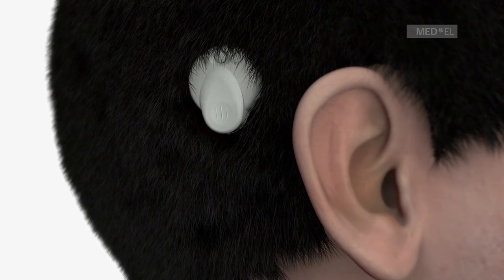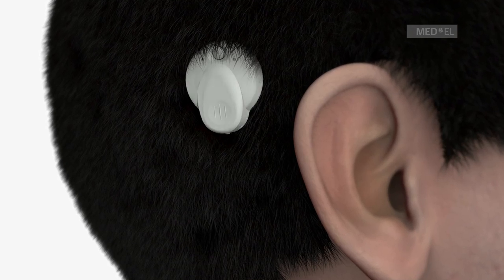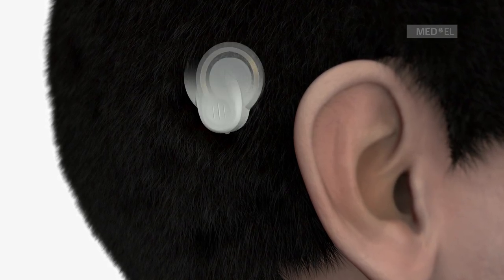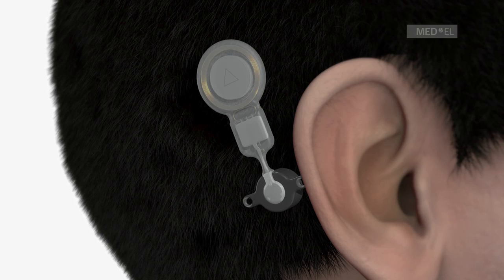The BoneBridge hearing implant system consists of an externally worn audio processor and an implant which is surgically positioned under the skin.